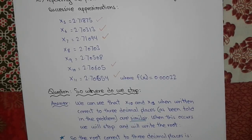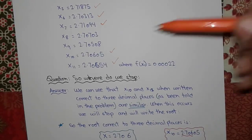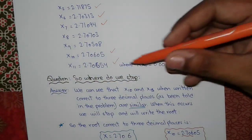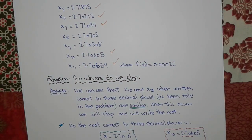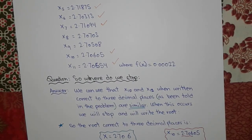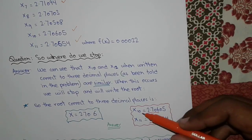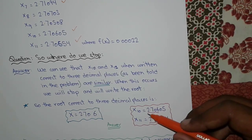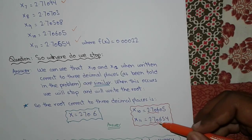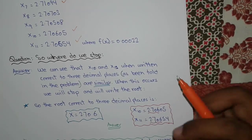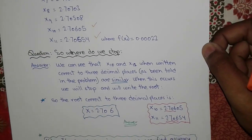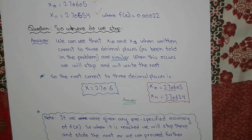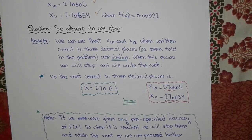We stop when x₁₀ and x₁₁, written correct to three decimal places, are the same. x₁₀ = 2.70605 and x₁₁ = 2.70654 both round to 2.706 at three decimal places. Since they agree, we stop here and state that the root correct to three decimal places is 2.706.